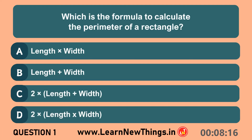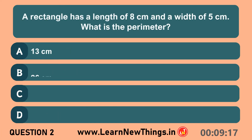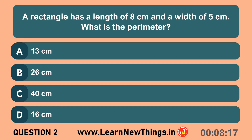Which is the formula to calculate the perimeter of a rectangle? 2 into length plus width. A rectangle has a length of 8 centimeters and a width of 5 centimeters. What is the perimeter? 26 centimeters.